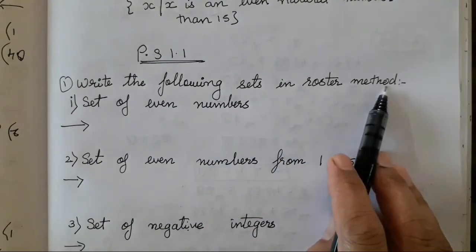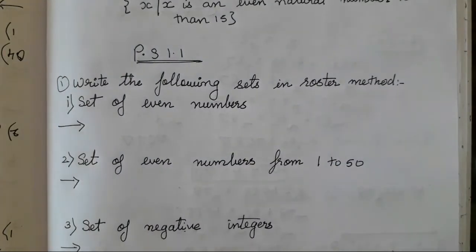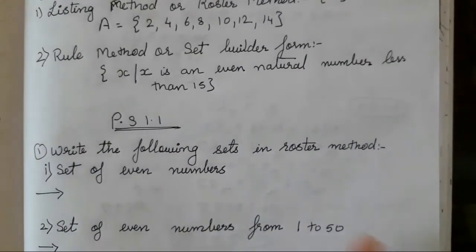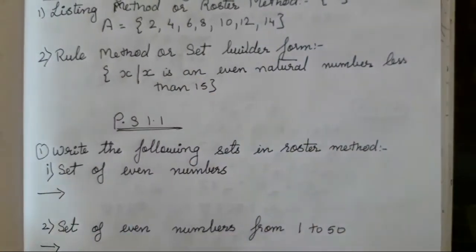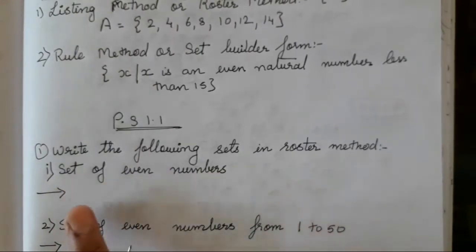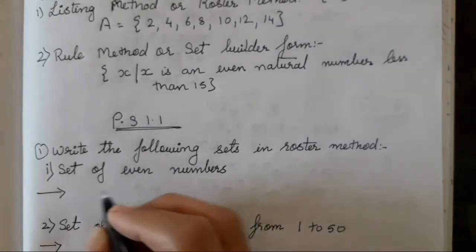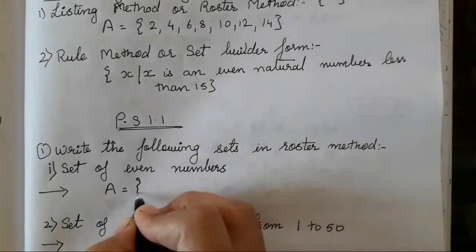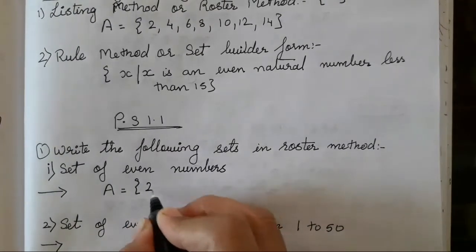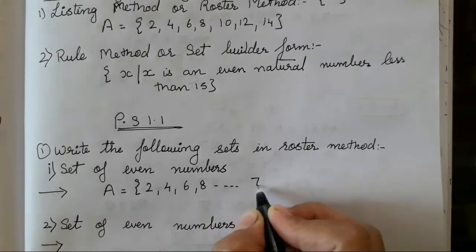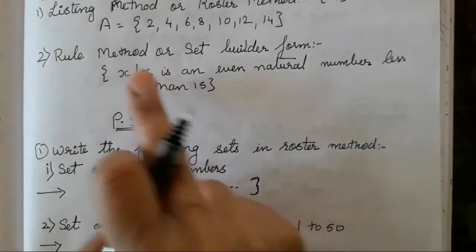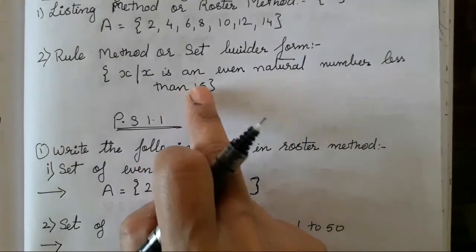Write the following set in roaster form. Roaster form means listing method. Don't forget the names children. Set of even numbers. Now as I said over here in rule form or set builder form the start and end is been defined. Whereas over here in this question nothing has been given. Only they have said set of even numbers. So we have to start and show infinite. So it is going to be like set A such that you all have to put it in such curve brackets, set of even numbers. So even numbers are 2, 4, 6, 8 and so on. Because they haven't mentioned anything over here in the question. Whereas in the rule method they had already mentioned less than 15. So keep these points in mind.